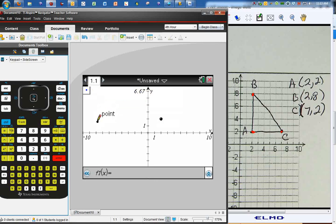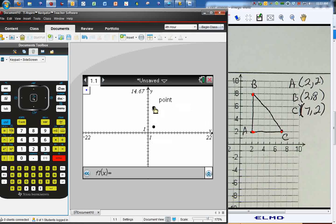Now, we're still in the point menu, so we just do it again. So, I want to put 2, 8. So, open parentheses, 2, enter, 8, enter. There it is.